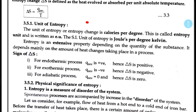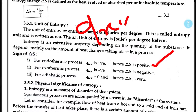In an endothermic process, the system absorbs heat, so Q reversible is positive, and therefore the entropy change delta S is positive. In an exothermic process, heat is evolved during the reaction, so Q reversible is negative, and at that time delta S is negative.